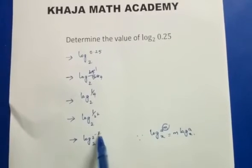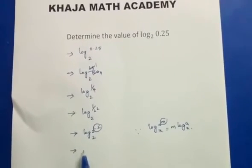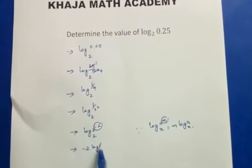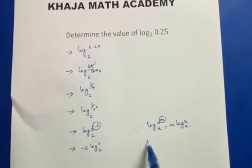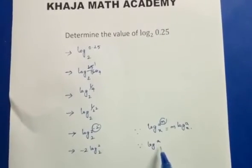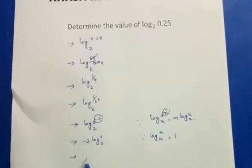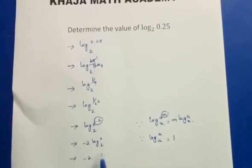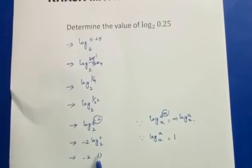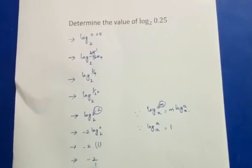In place of m we have minus 2, so it becomes minus 2 times log 2 to the base 2. The logarithm of a number to the same base is 1, so log 2 to the base 2 equals 1. Therefore, the answer is minus 2.